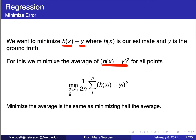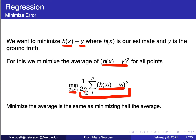More formally, in math terms, I want to find the minimum theta 0 and theta 1 for this function. This is just an average — the sum of the squared errors divided by the number of points, or divided by twice the number of points. Minimizing the average and minimizing half the average is the same thing; the factor of 2 just makes the math easier and doesn't change our minimization.